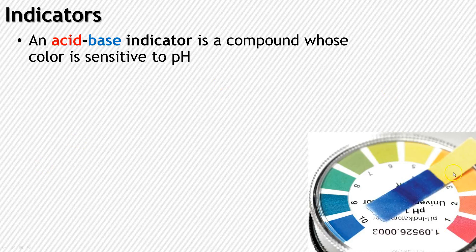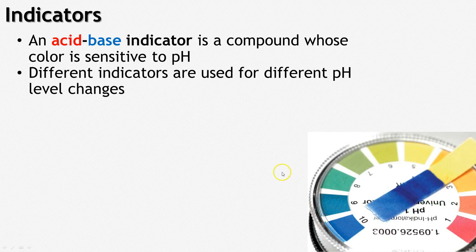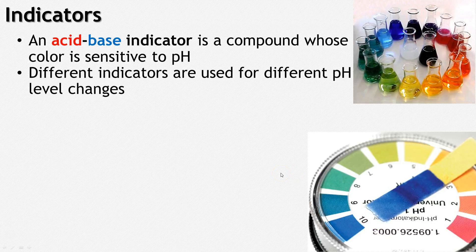Here you can see the basic universal indicator — it's a combination of several indicators together. Acidic doesn't mean more red, basic doesn't mean more blue, neutral is going to be right around the green range. It will change color based upon what the solution is. This one is going to be approximately pH 10. We use different indicators for different pH level changes, and there are lots of different indicators out there.